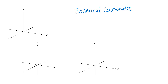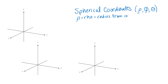In spherical coordinates we have ordered triples, and it's important to know what the values stand for. The first value is rho, a lowercase Greek letter, and that represents a radius from the origin outward in all directions — not just parallel to the XY plane like r in cylindrical coordinates. If you go out a constant radius from the origin in all directions, you get a sphere, which is how spherical coordinates gets its name.